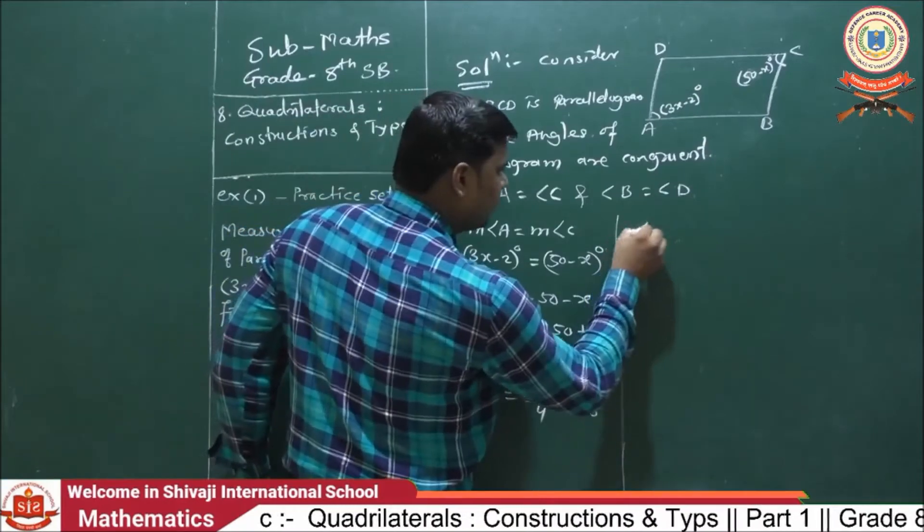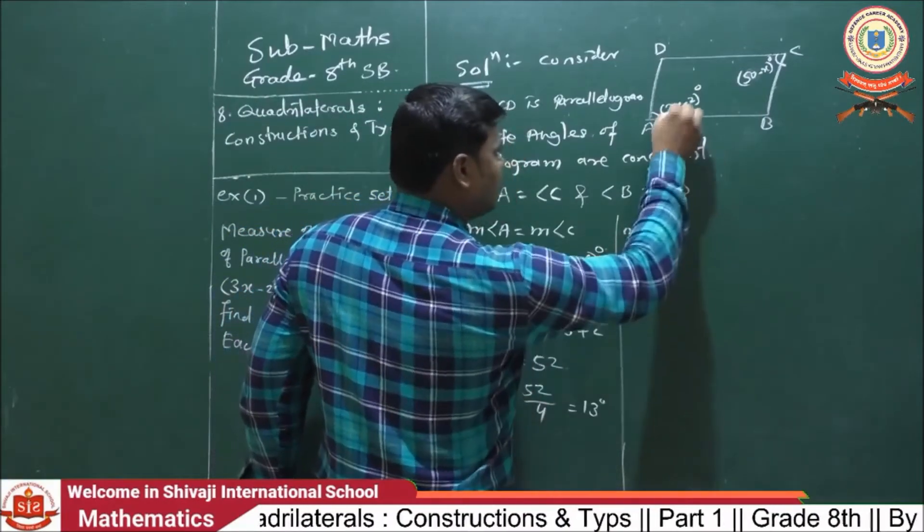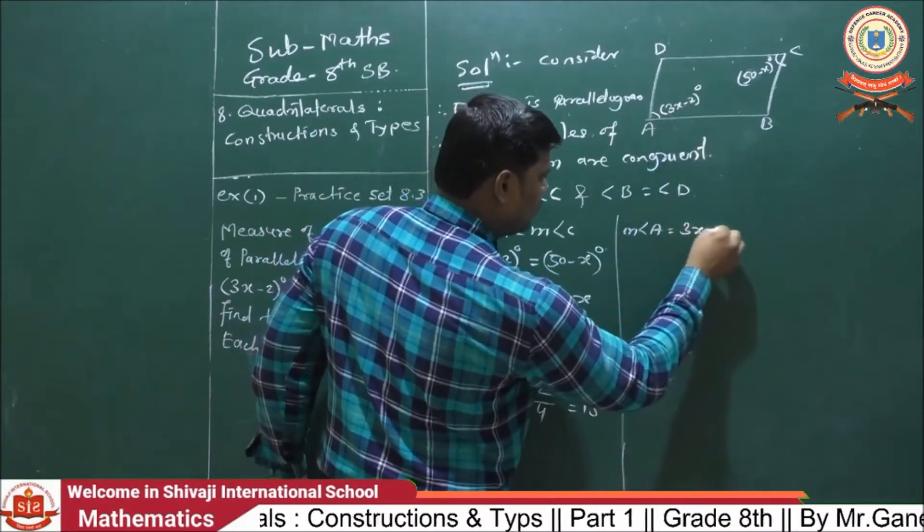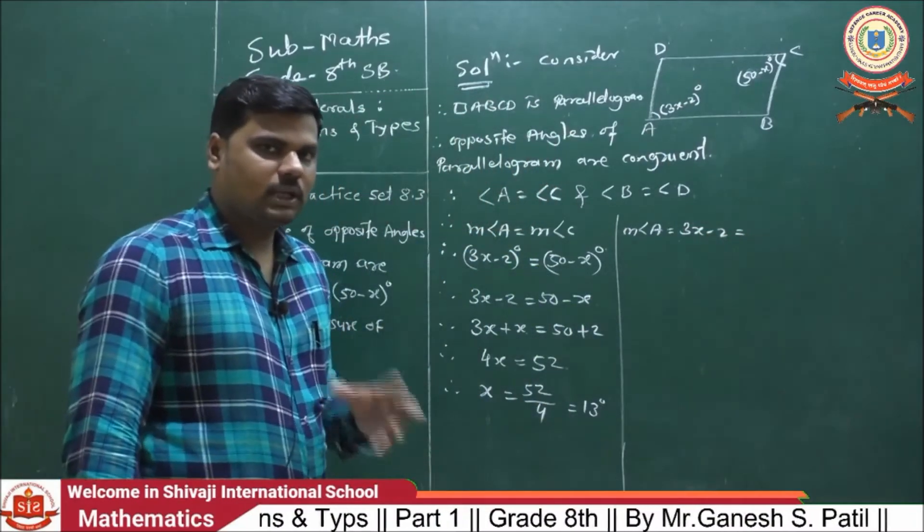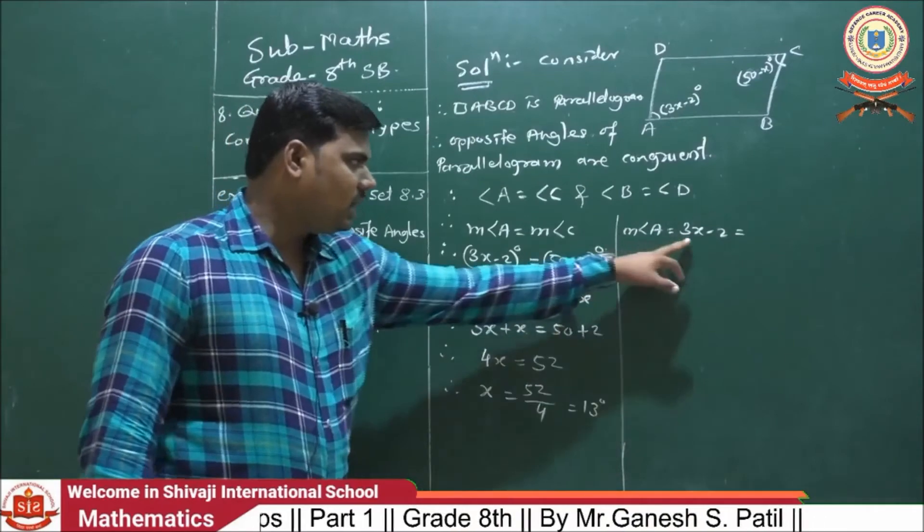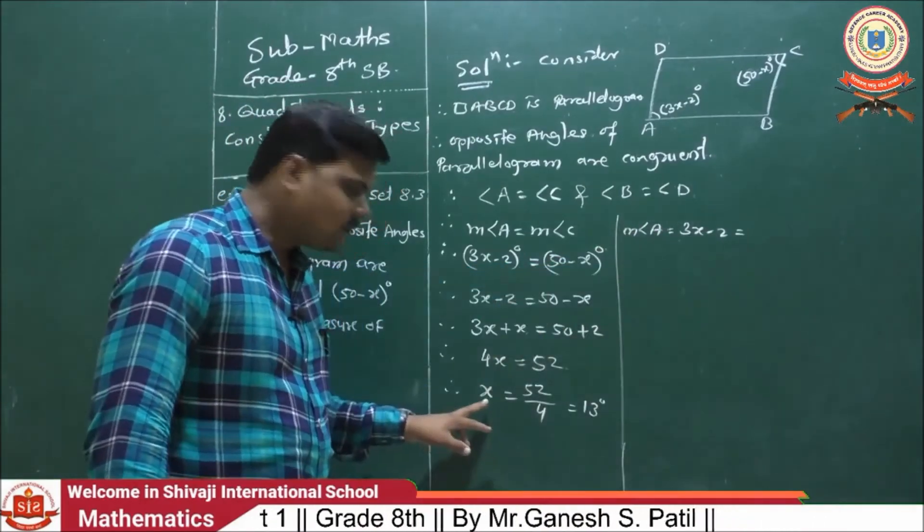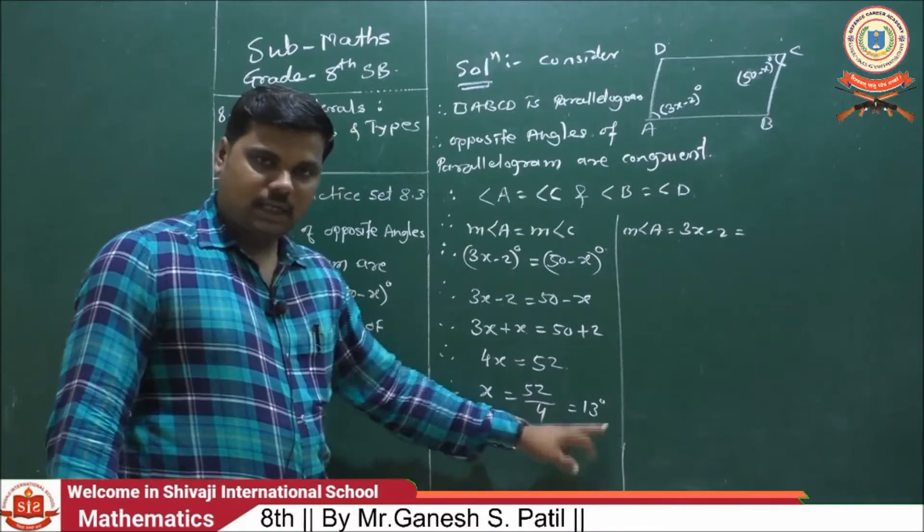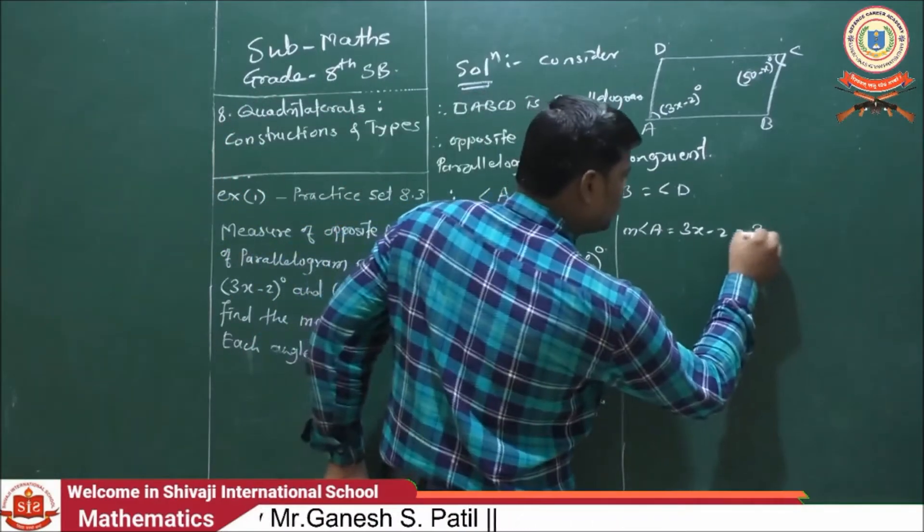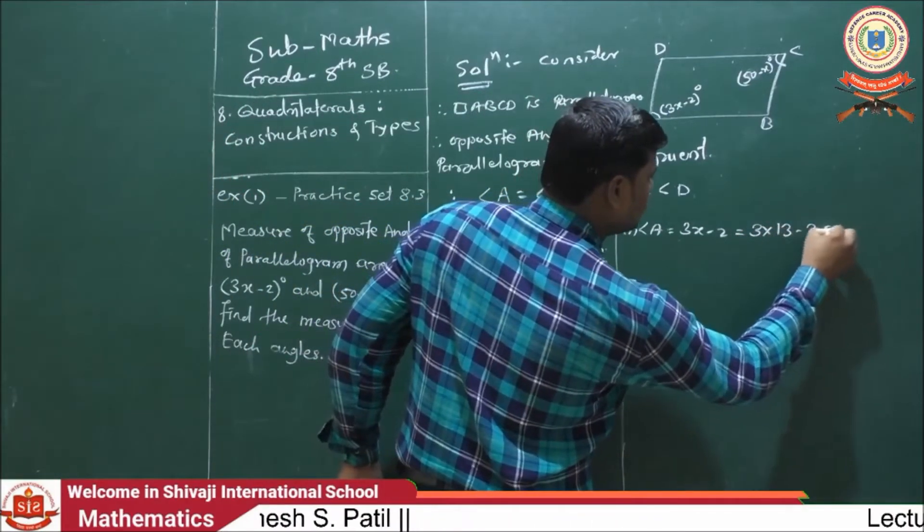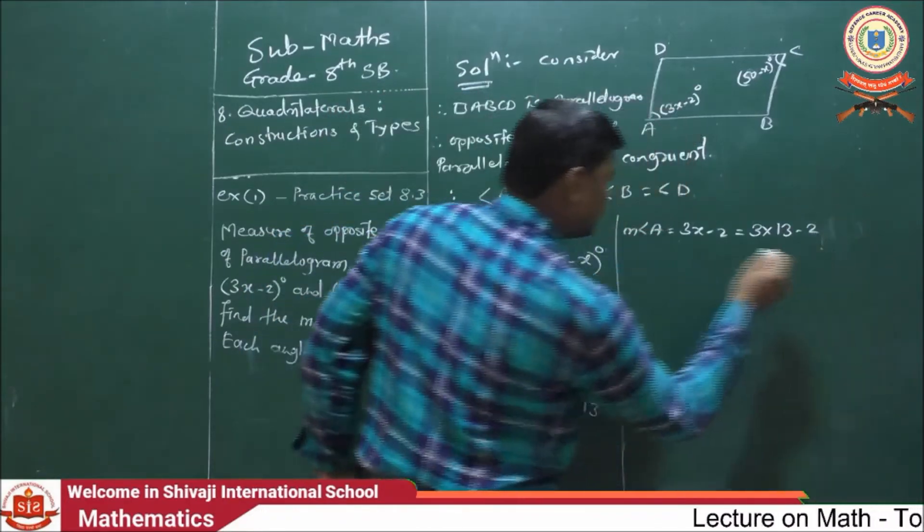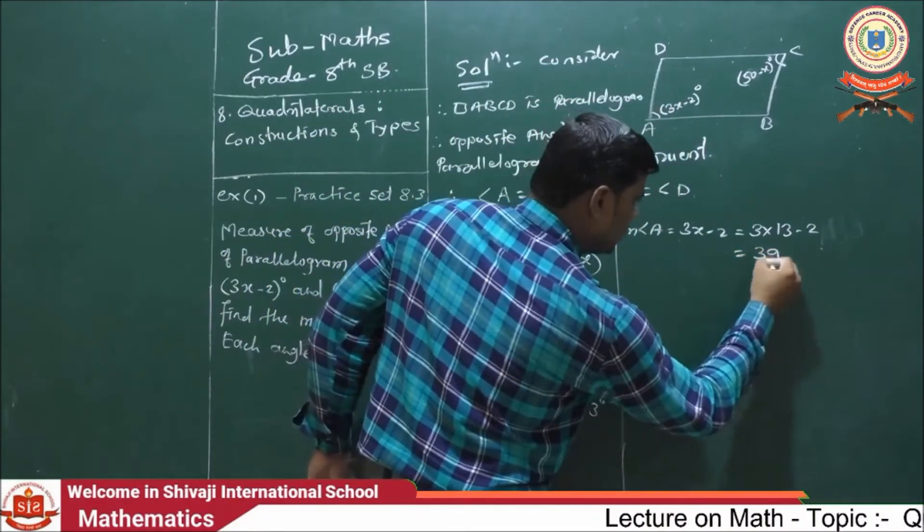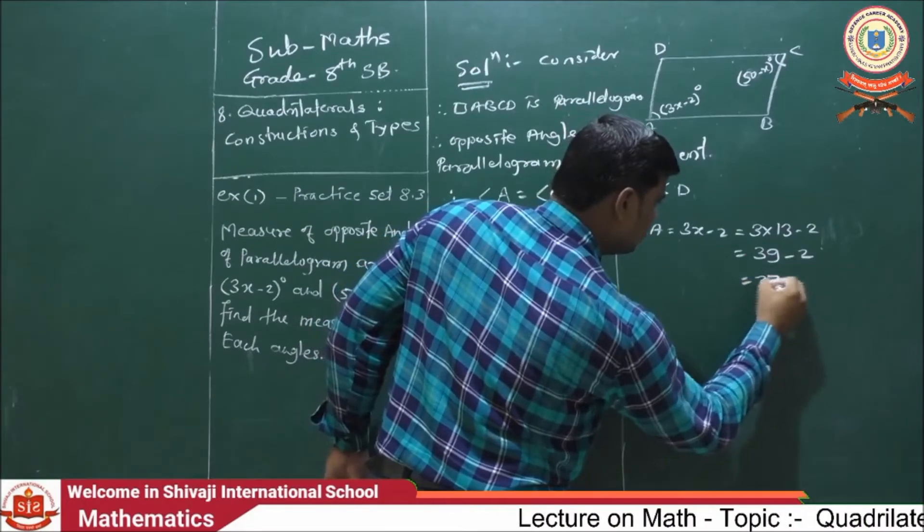Then, measure of angle A is equal to 3x minus 2 degrees. Now, 3 into x. And what is the value of x? The value of x is 13. Then, 3 into 13 minus 2 is equal to 37 degrees.